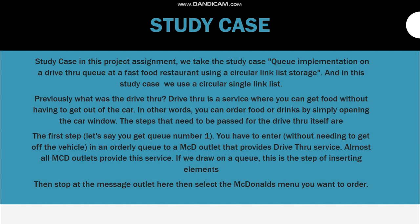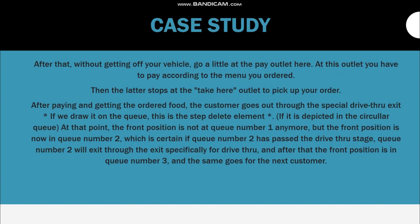For example, you get queue number one — you enter without needing to get off your vehicle, in an orderly queue to a McDonald's outlet that provides drive-thru service. If we map this to a queue, this is the step of inserting elements. You stop at the message outlet, select the menu you want to order, then proceed to the pay outlet and pay according to your order. Then you stop at the take-here outlet to pick up your order. After getting the food, the customer exits through the special drive-thru exit — this step maps to deleting an element.